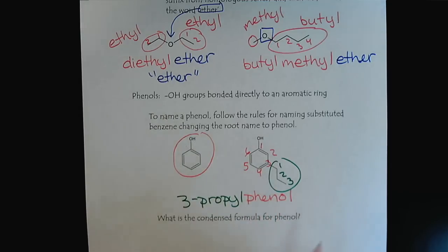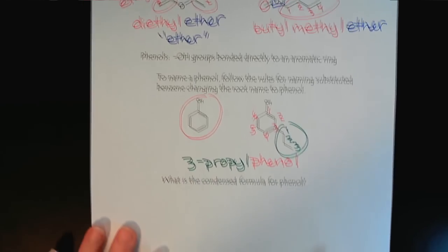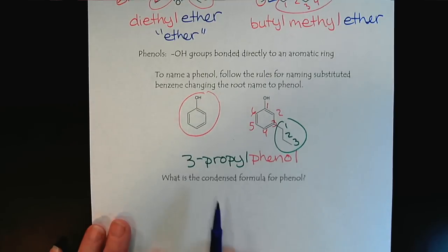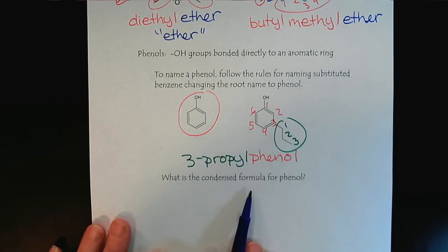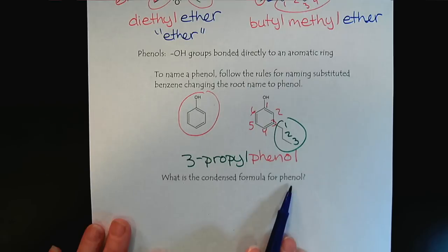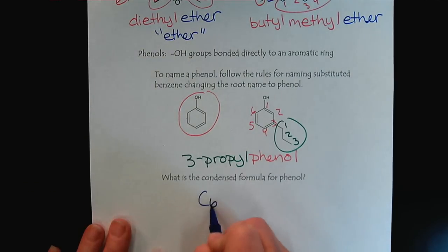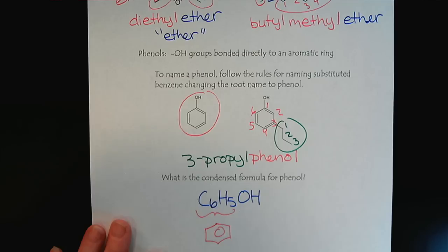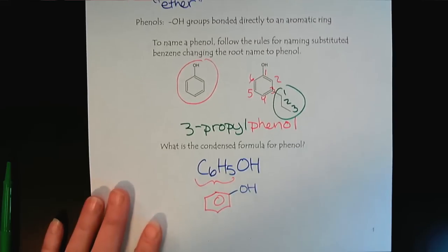And then just a quick reminder that aromatic rings, benzene rings in particular, are the only rings we can write condensed formulas for. So if we wanted to write the condensed formula for phenol, C6H5OH. So remembering that this is going to represent the benzene ring. And then we would have the OH coming off.